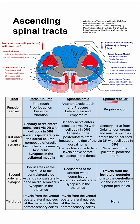Lastly, let's look at the spinocerebellar tract. Its function is proprioception. The first order neuron is a sensory nerve from the Golgi tendon organs and muscle spindles. They enter the spinal cord via the dorsal root with a cell body in the dorsal root ganglion, like the other tracts, and synapse in the ipsilateral posterior horn. The second order neuron travels from the ipsilateral posterior horn to the cerebellum via the inferior and superior peduncles, and there is no third order neuron for the spinocerebellar tract.